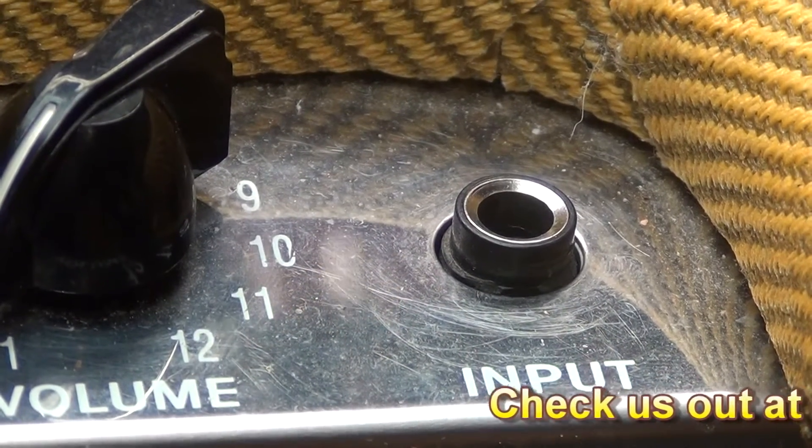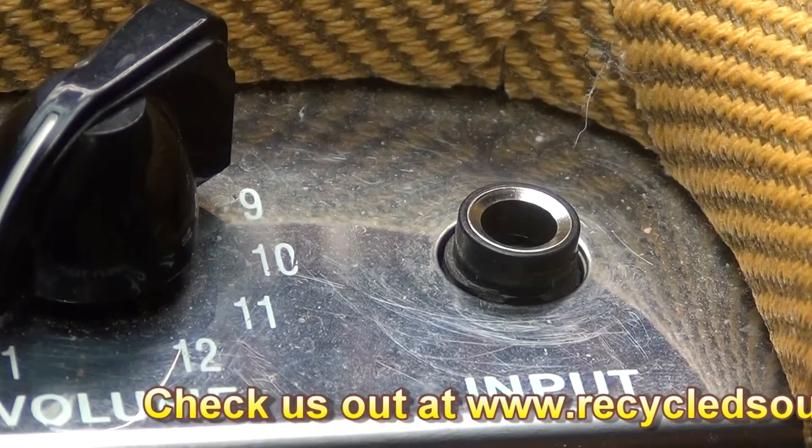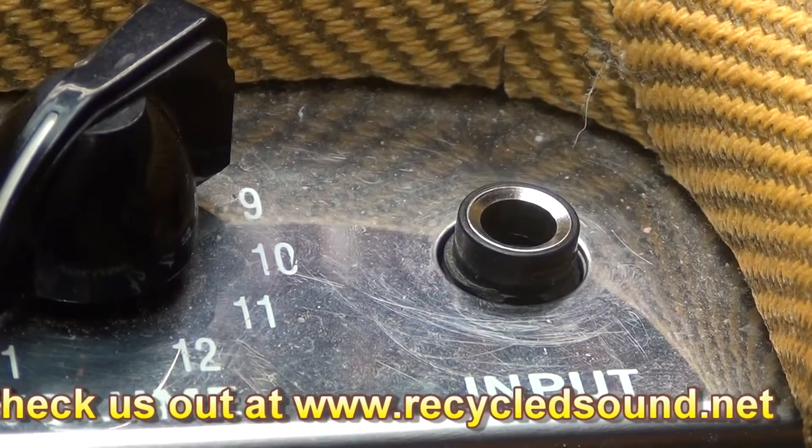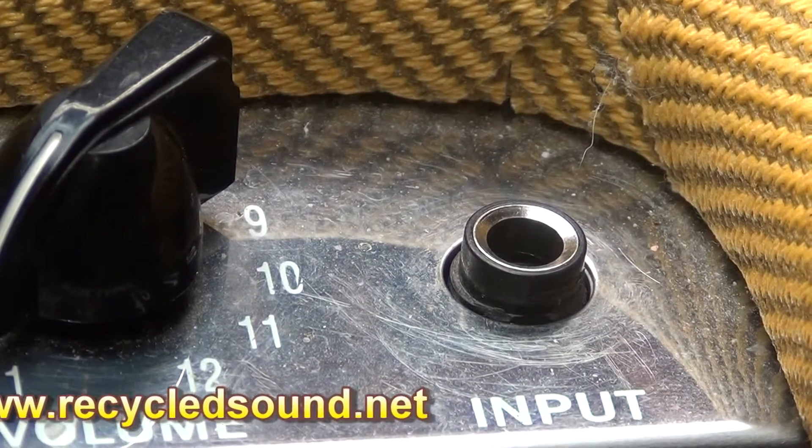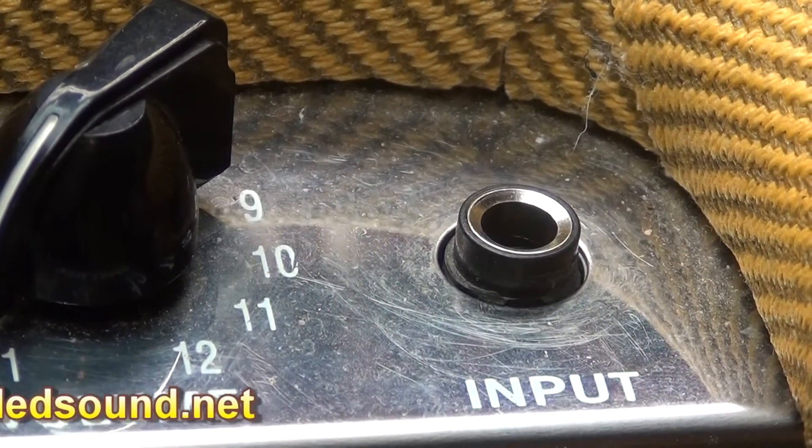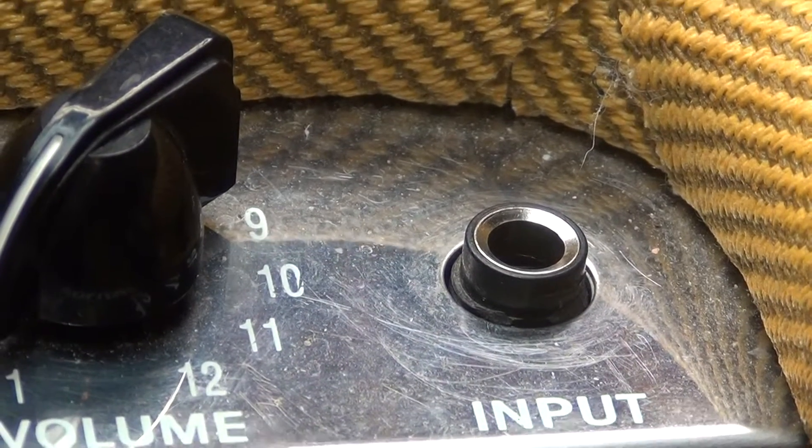Well, if you've owned a Blues Junior, a little Pro Junior, or any of those little Fender amps with the EL84s that we all like to fool with so much, you are probably familiar with what you are looking at, a stripped out and broken plastic input.